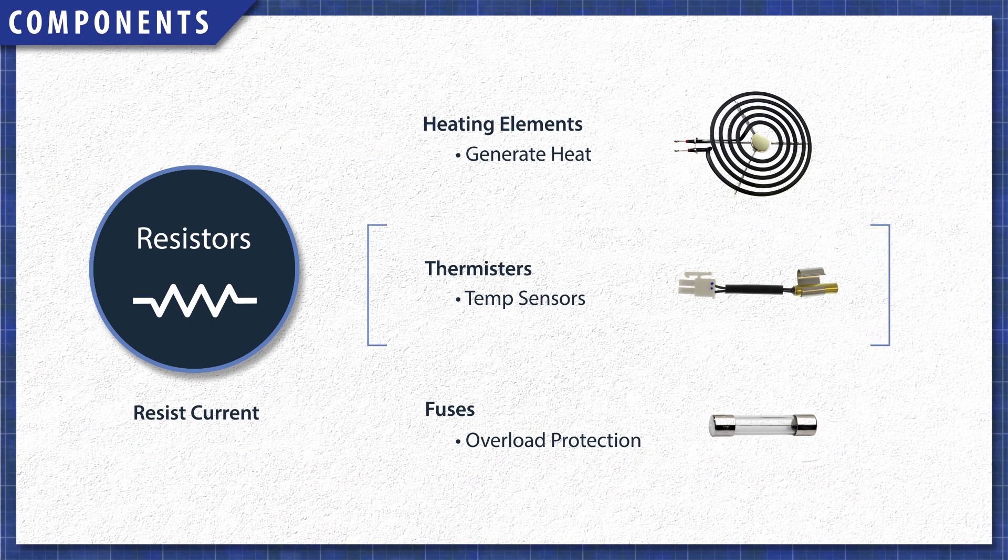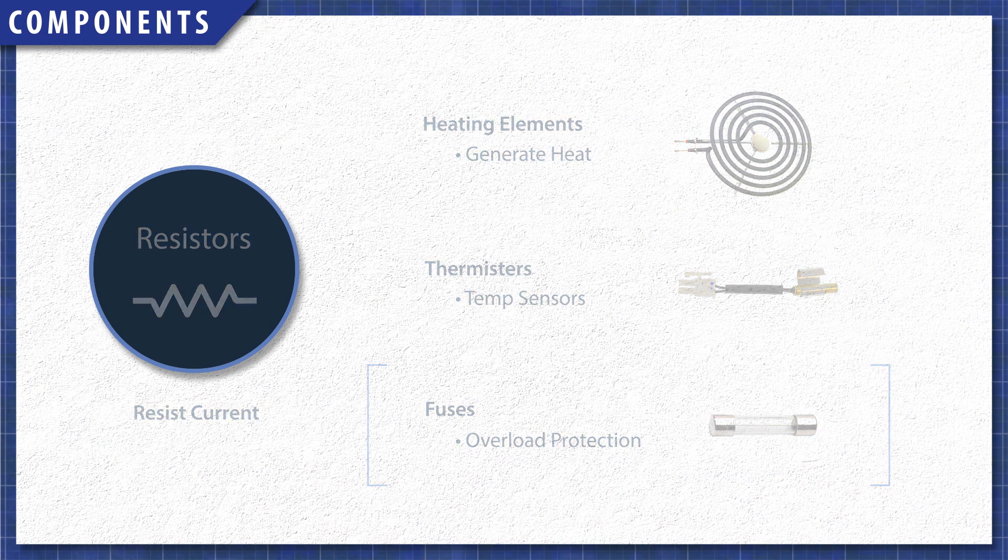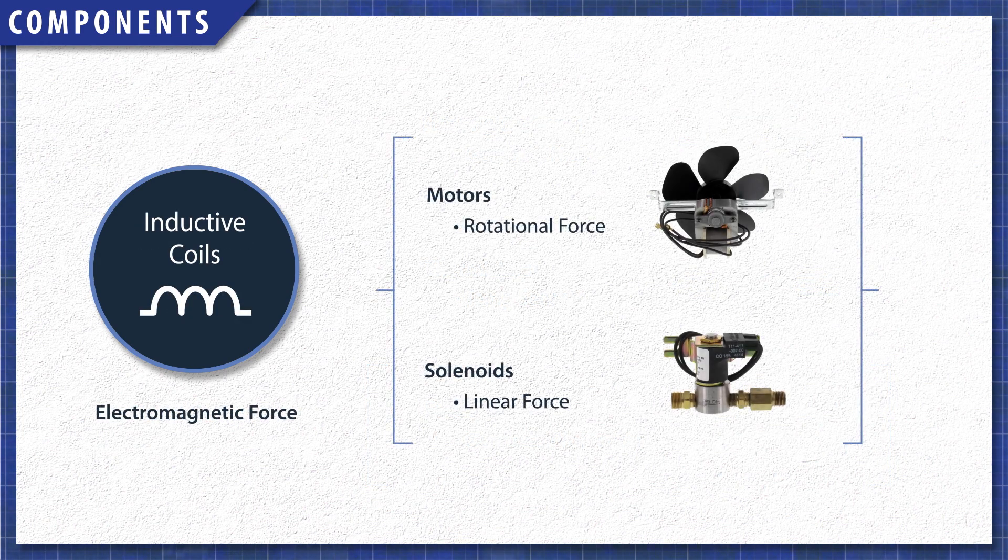Thermistors are heat sensitive resistors. These are used as temperature sensors in refrigerators and ovens. Fuses are safety devices, which are designed to burn up when the current exceeds a safe amount. Motors and solenoids use coils of wire to generate an electromagnetic force. Motors use this force to turn blower fans and pumps, while solenoids control valves and door locks.